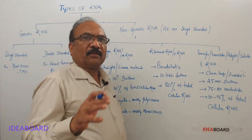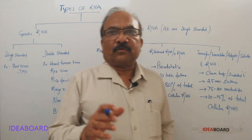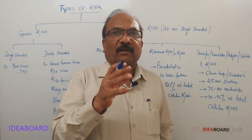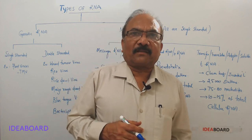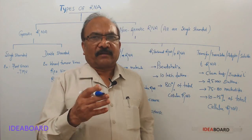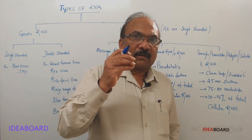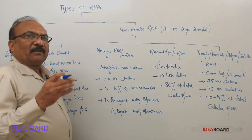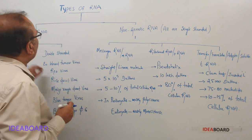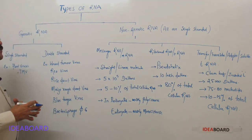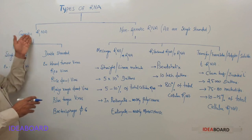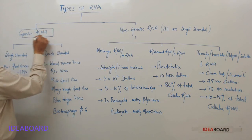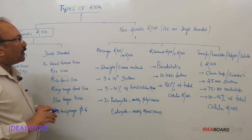In some acellular organisms - you should remember this point, only in acellular organisms - what are those acellular organisms? Viruses. In these viruses, RNA can behave as genetic material. That is why the RNA which is behaving as genetic material can be called as genetic RNA.